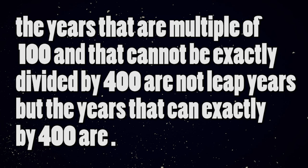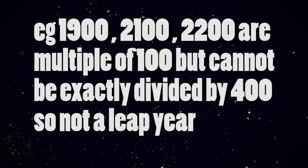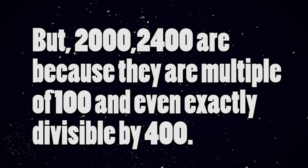To correct that, there are rules to be followed. If a year is a multiple of 100 and cannot be divisible by 400, then it's not a leap year. For example, 900, 2100, and 2200 are not leap years, but 2000 and 2400 are leap years.